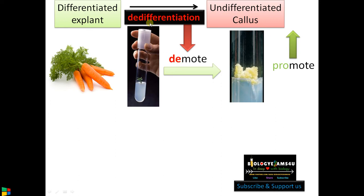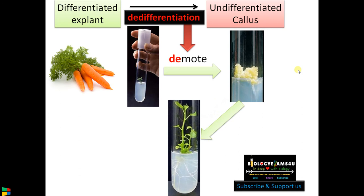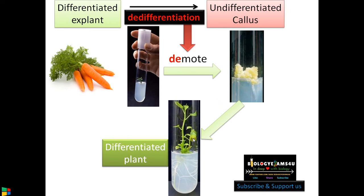The second part: from the callus, we later get a differentiated plant with leaves, roots, and stem. This process is called re-differentiation — from the callus, we are getting a differentiated plant again. That is why we add 're-', meaning once again differentiated into a complete plant.